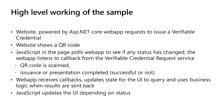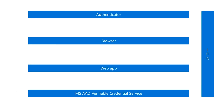Maybe it's easier to just walk through the sequence diagram and explain in detail what happened. We have the authenticator with the wallet, the browser with the HTML and JavaScript, the web app which is our .NET Core app running, and we have our verifiable credential service running in the back end. First I click on the get credential button in the browser, which calls an API from the web app, which in turn calls our API with a specific payload.